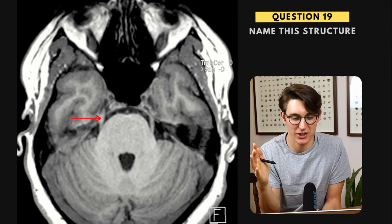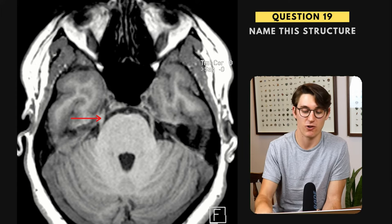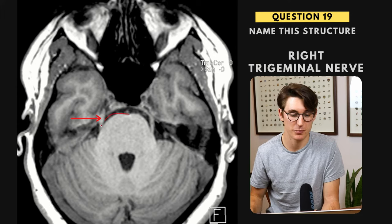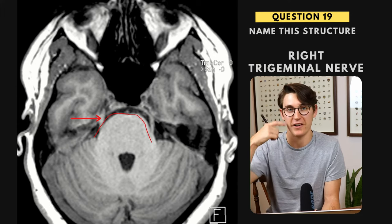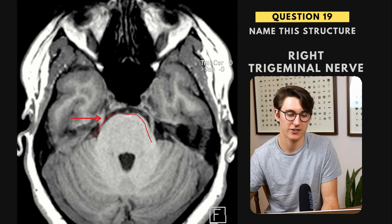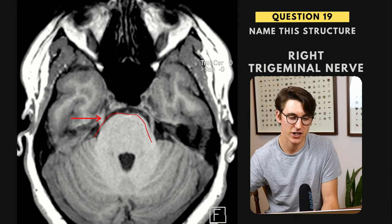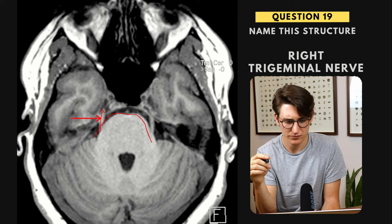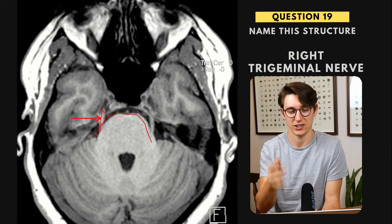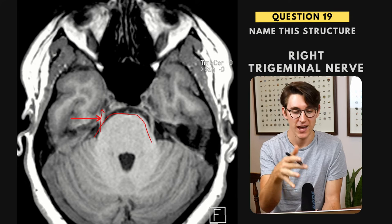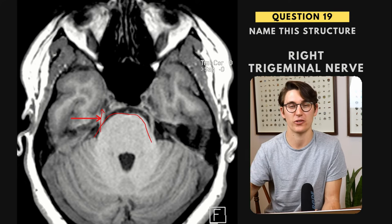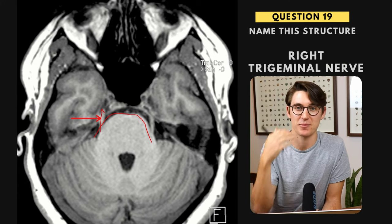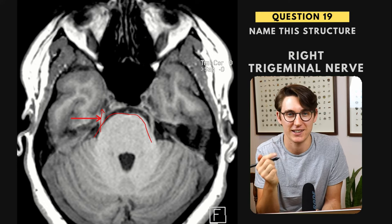Question nineteen — we're asked to label this structure on the right-hand side, and this is the right trigeminal nerve. We have our pons here. The trigeminal nerve is the biggest of the cranial nerves — very easy normally to identify on an MRI scan with thin enough slices. It's a large nerve that extends anteriorly into Meckel's cave. There are lots of pathologies that can happen along that track, so we want to look at these scans over and over again and identify the trigeminal nerve to know what's normal.